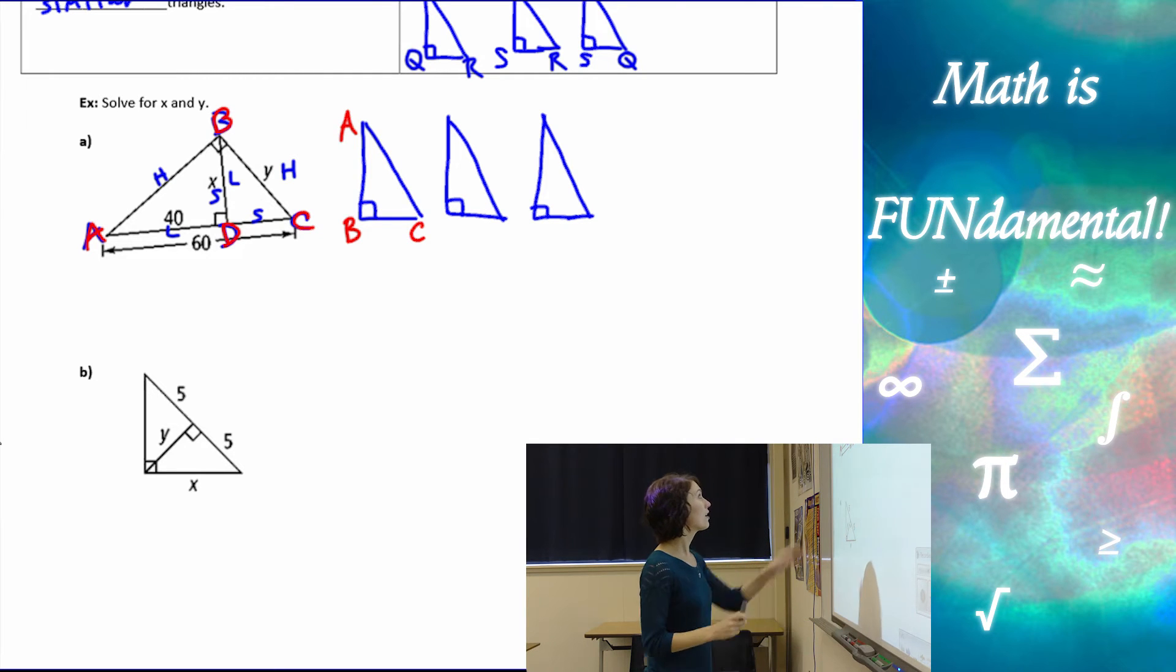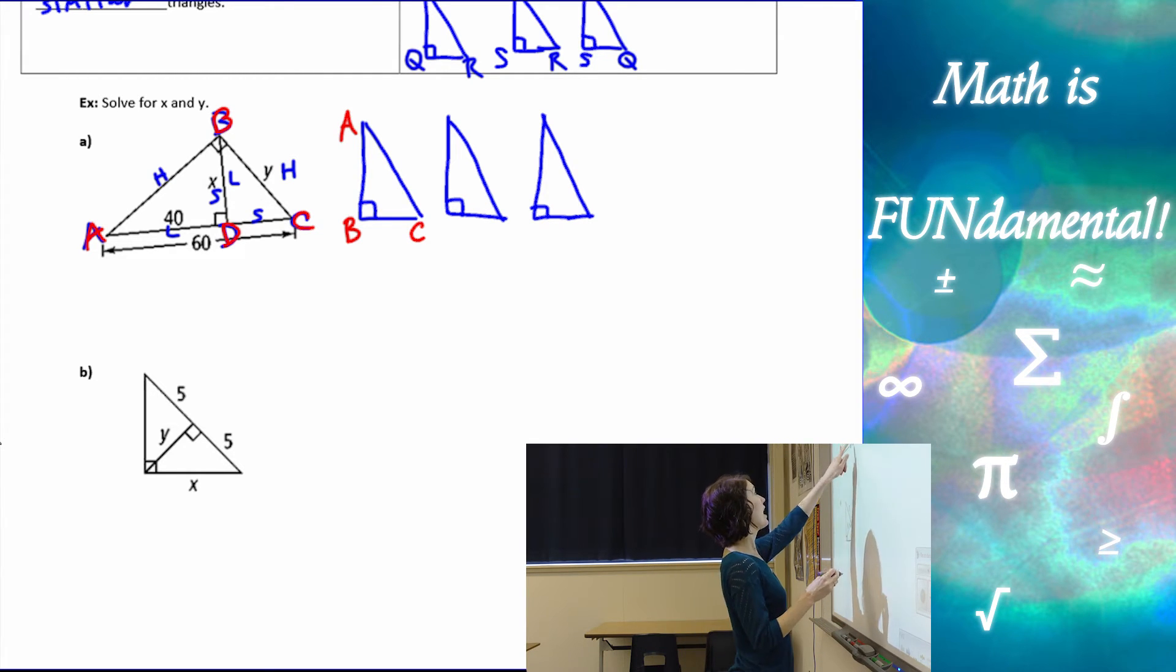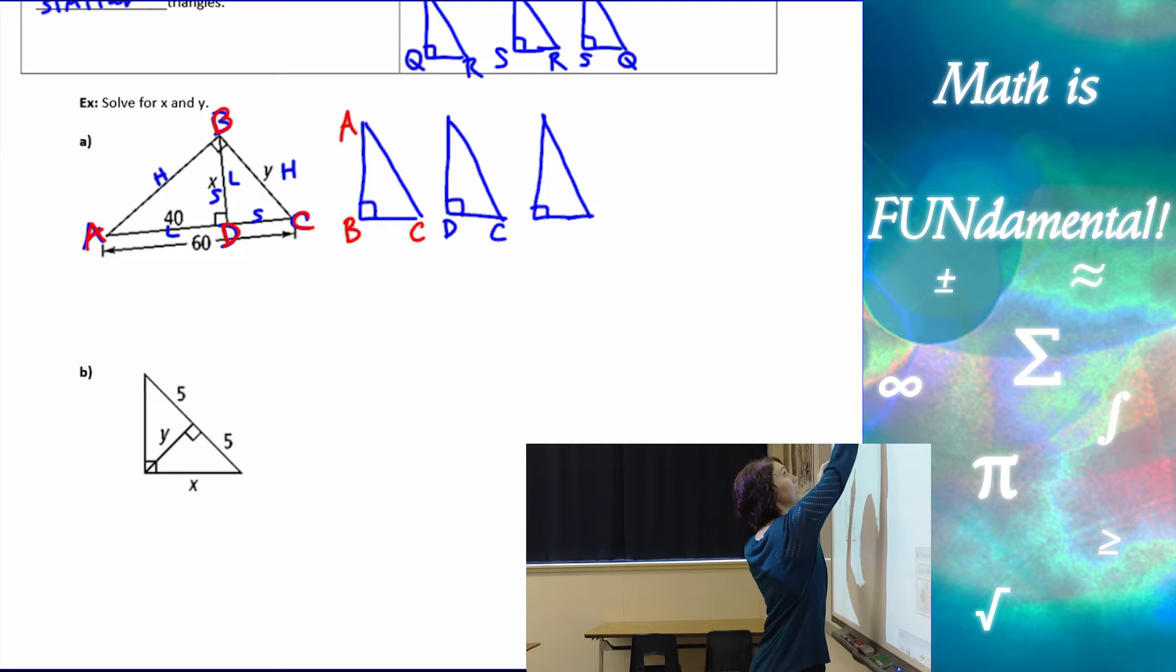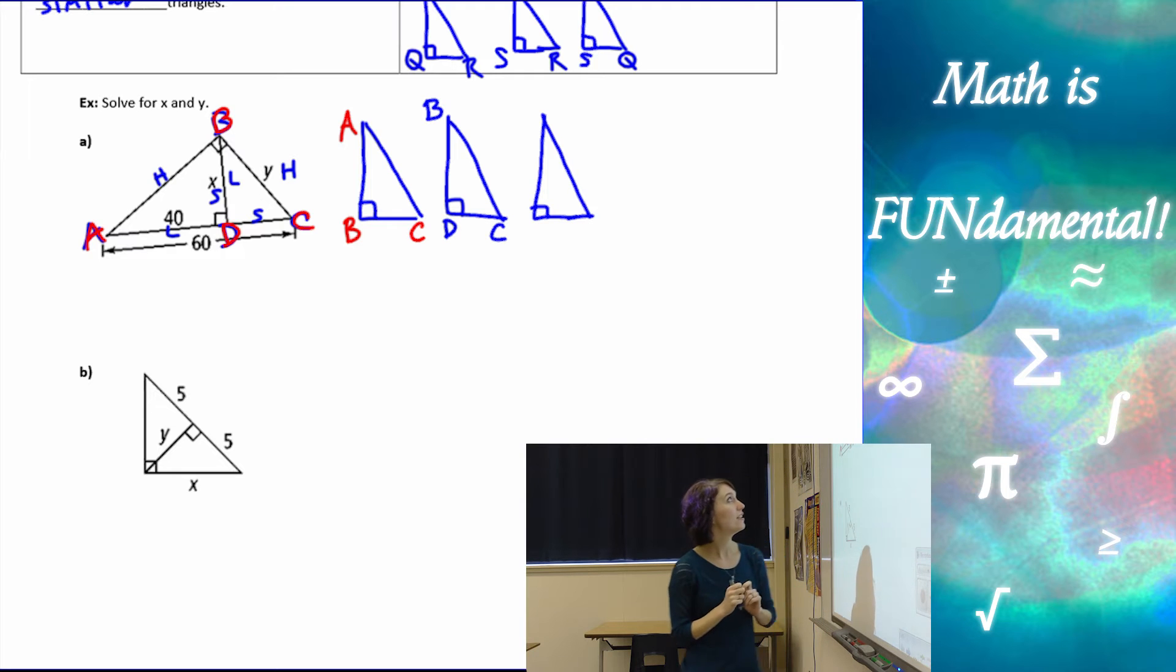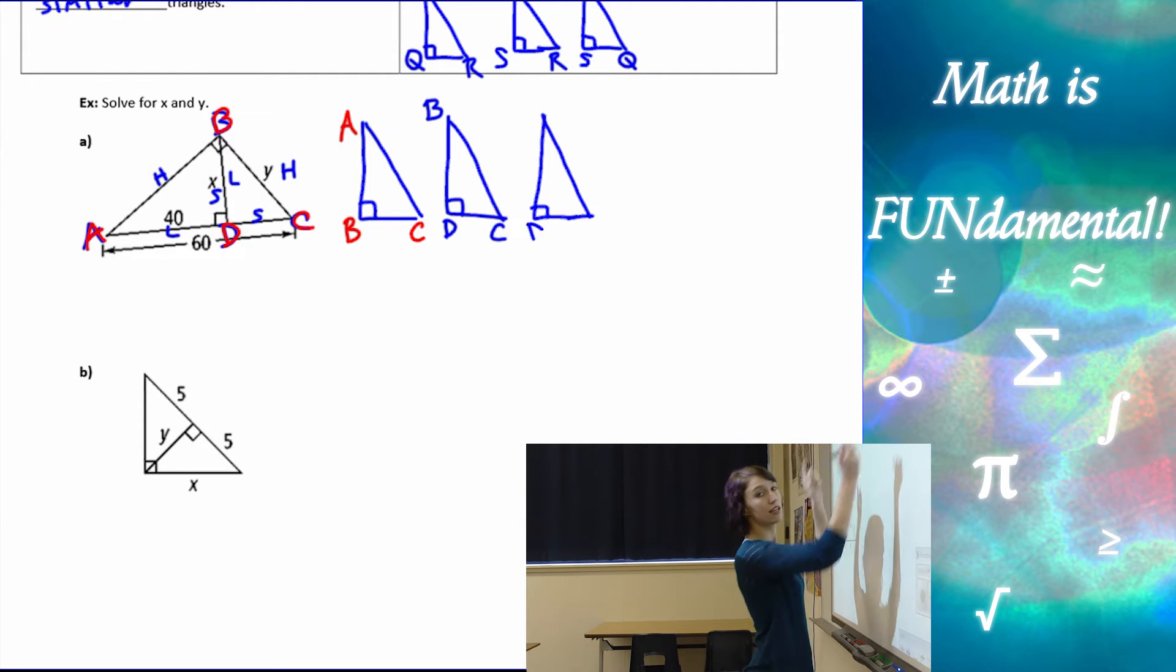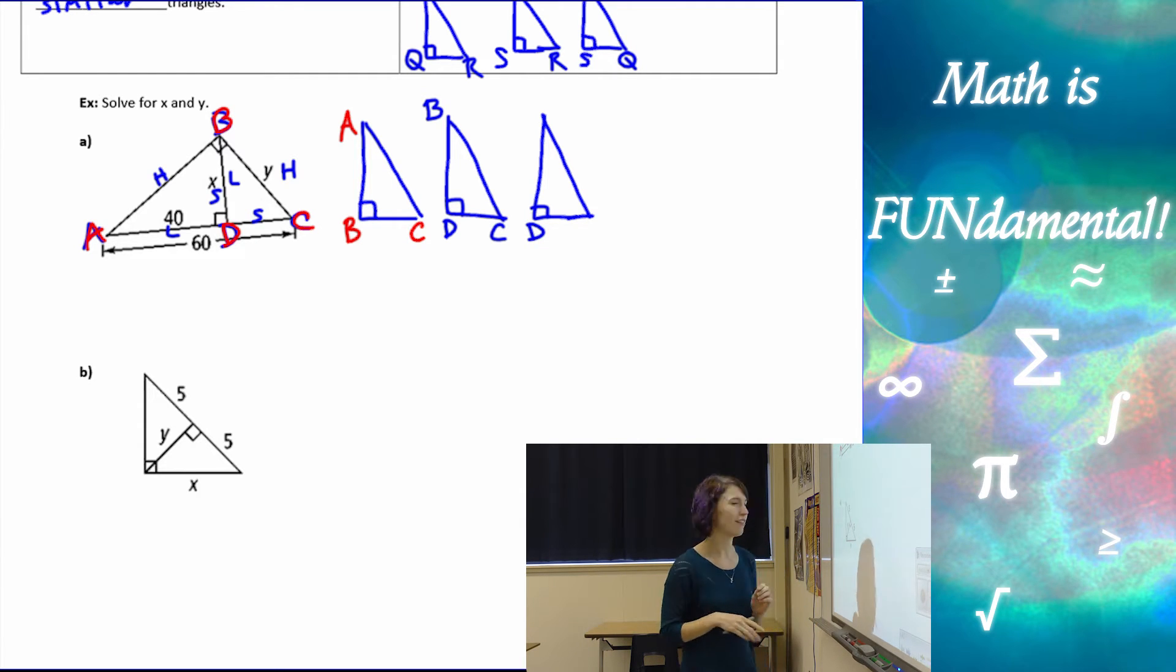Then we look at our small triangle. We have D is the right angle, D, C is my shorter side, and D, B is my longer side. And then we have our medium triangle. D is the right angle. Always start with the right angle. It makes it easier.